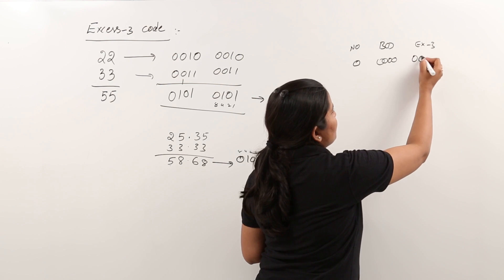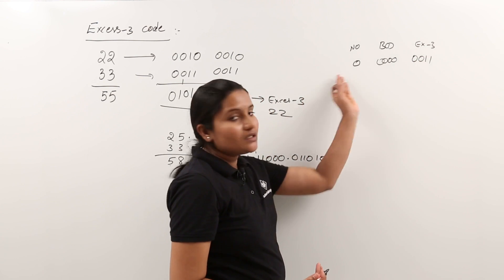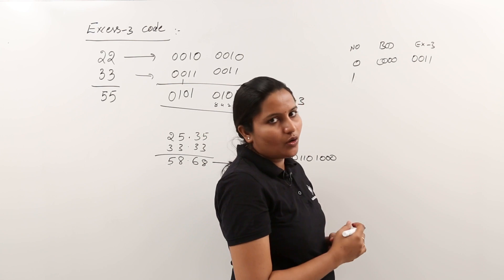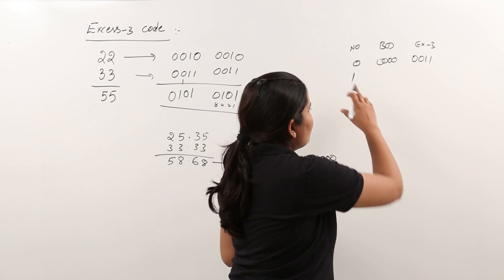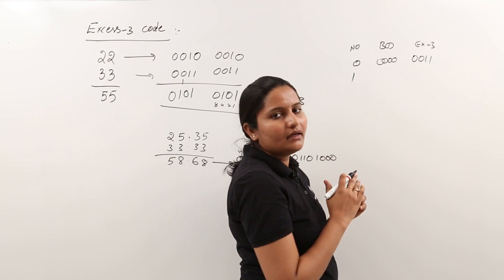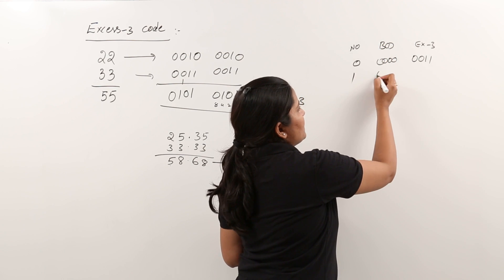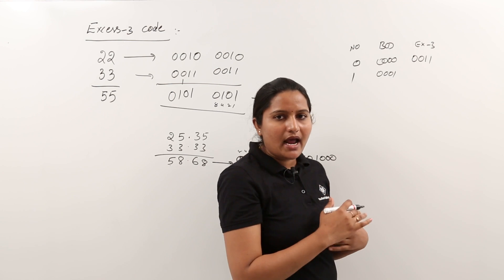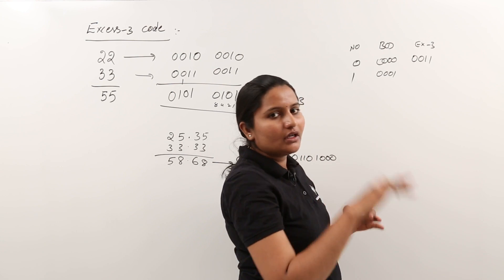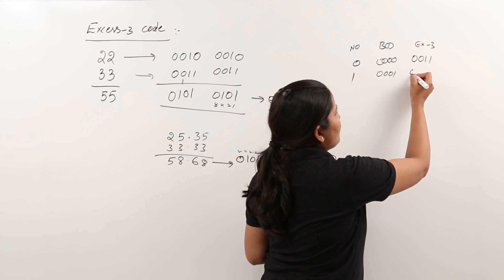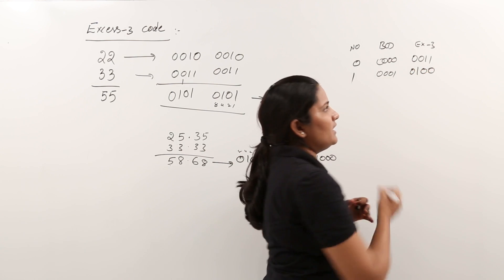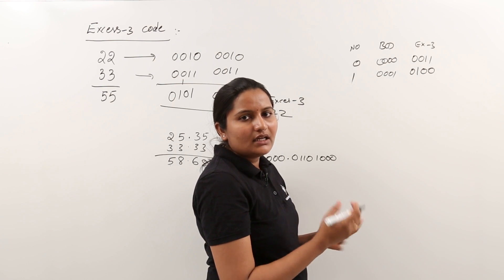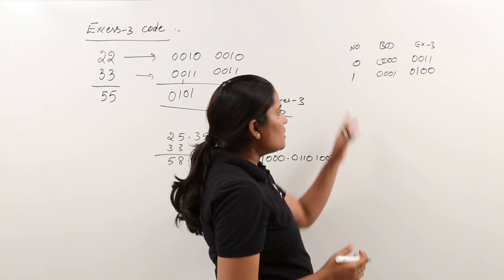So 0011 will be XS3 code for 0. Now if you want XS3 code for number 1, for this one you have to add 3 in your mind. So for BCD 0001, but in XS3 for 1 you need to add another 3. So that means for 4 you need to write. That's it. We are not doing anything, just adding 3.